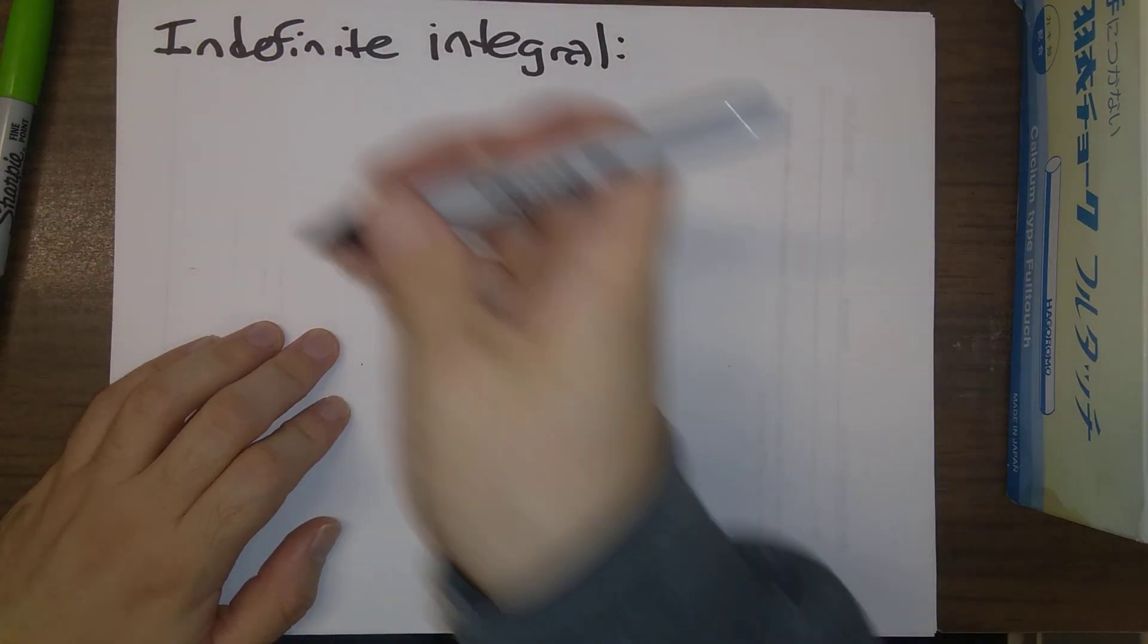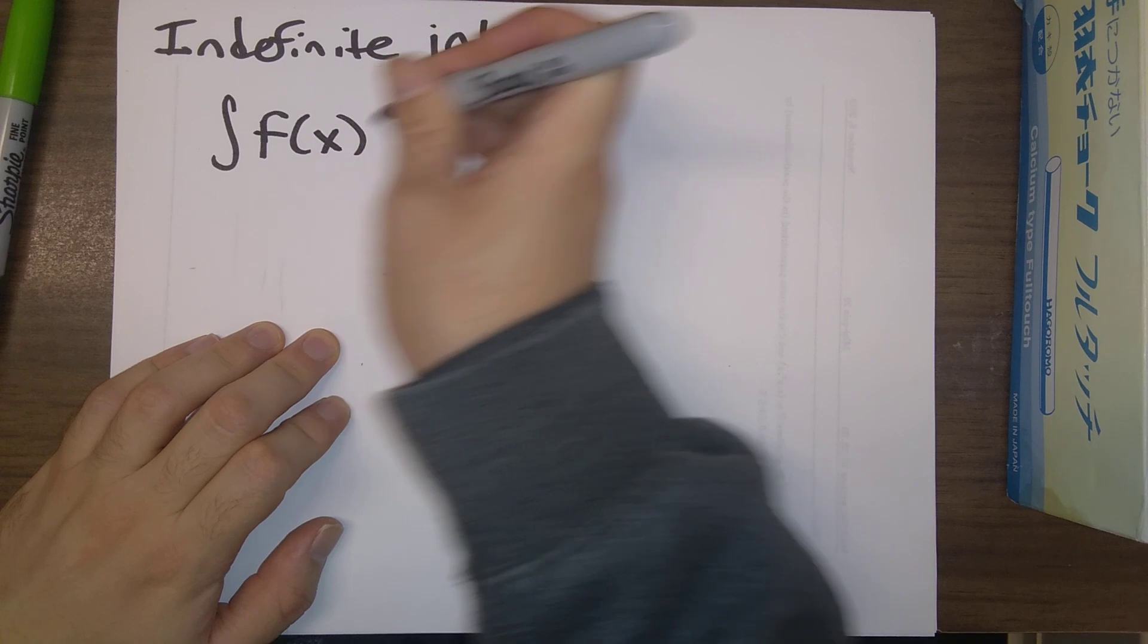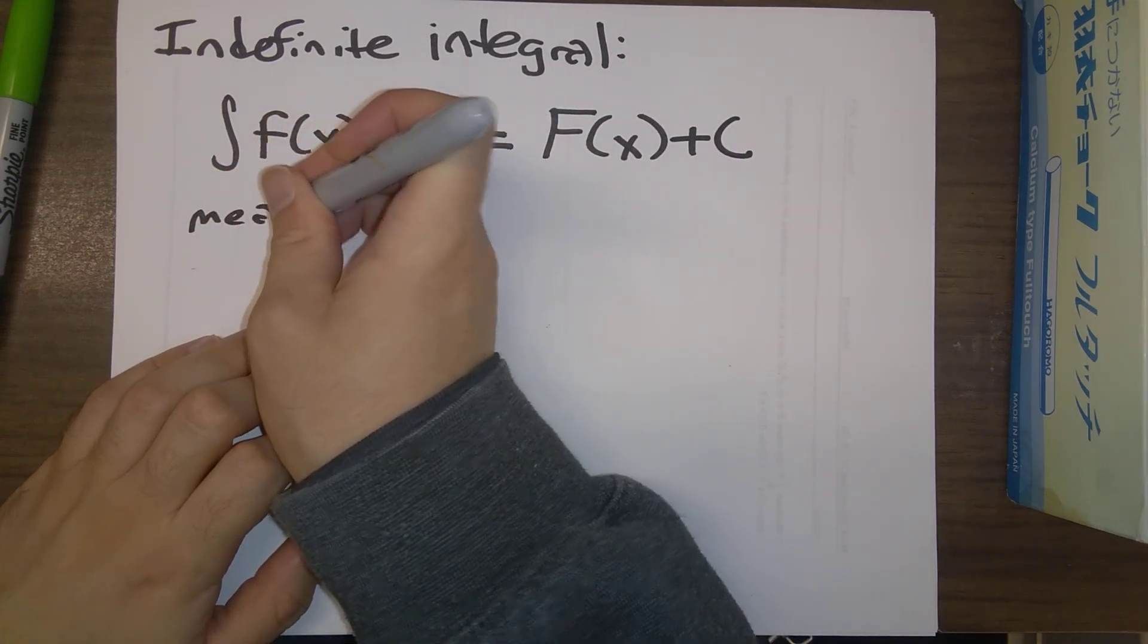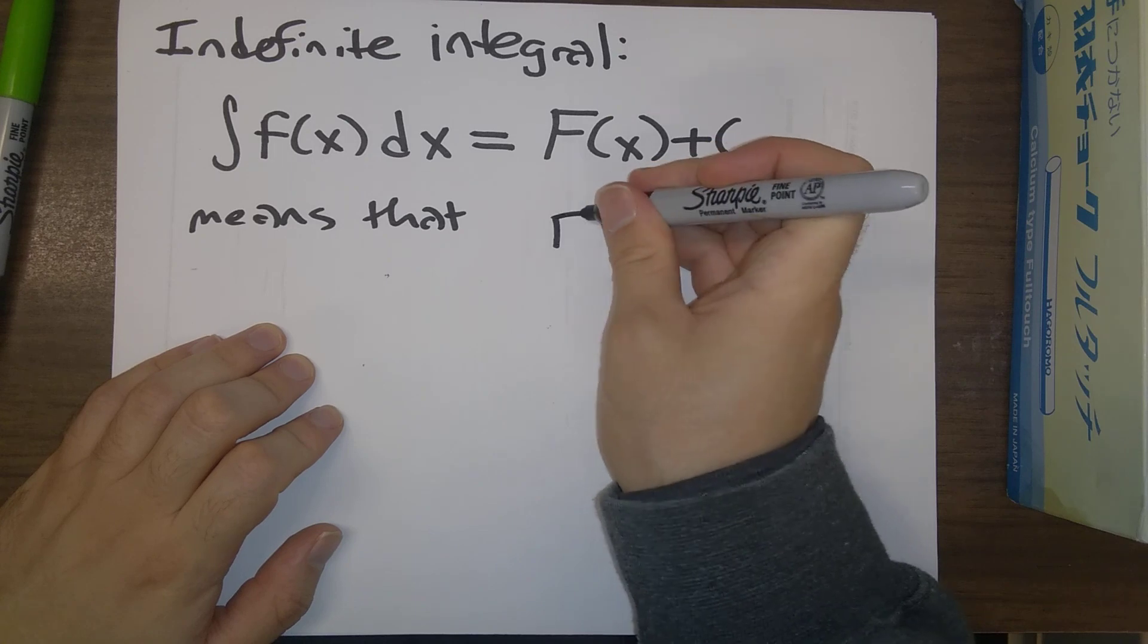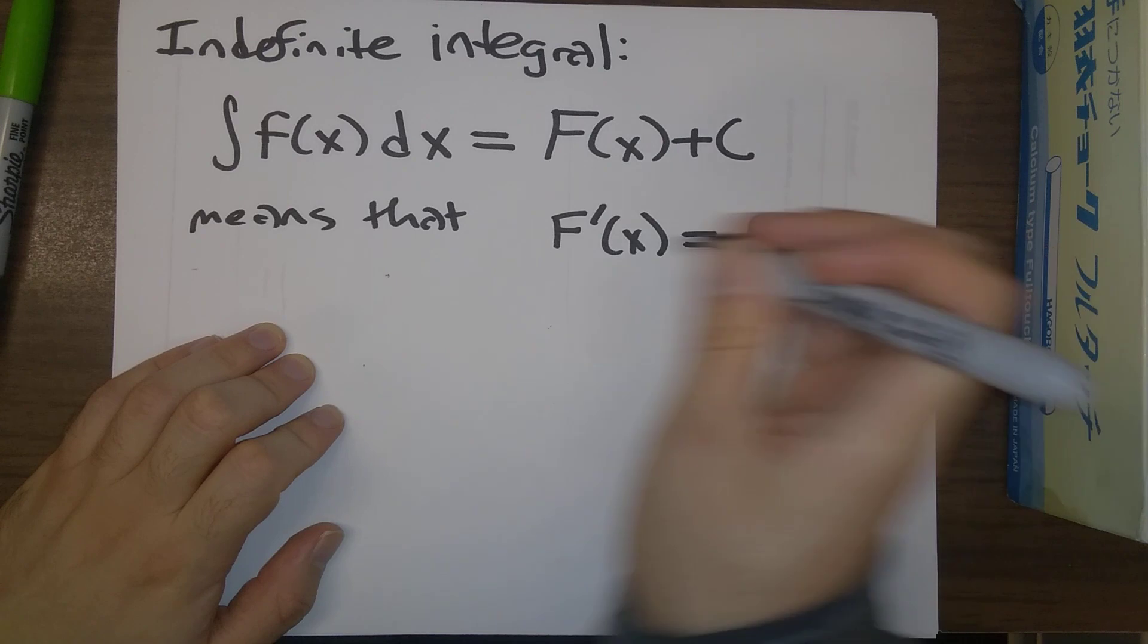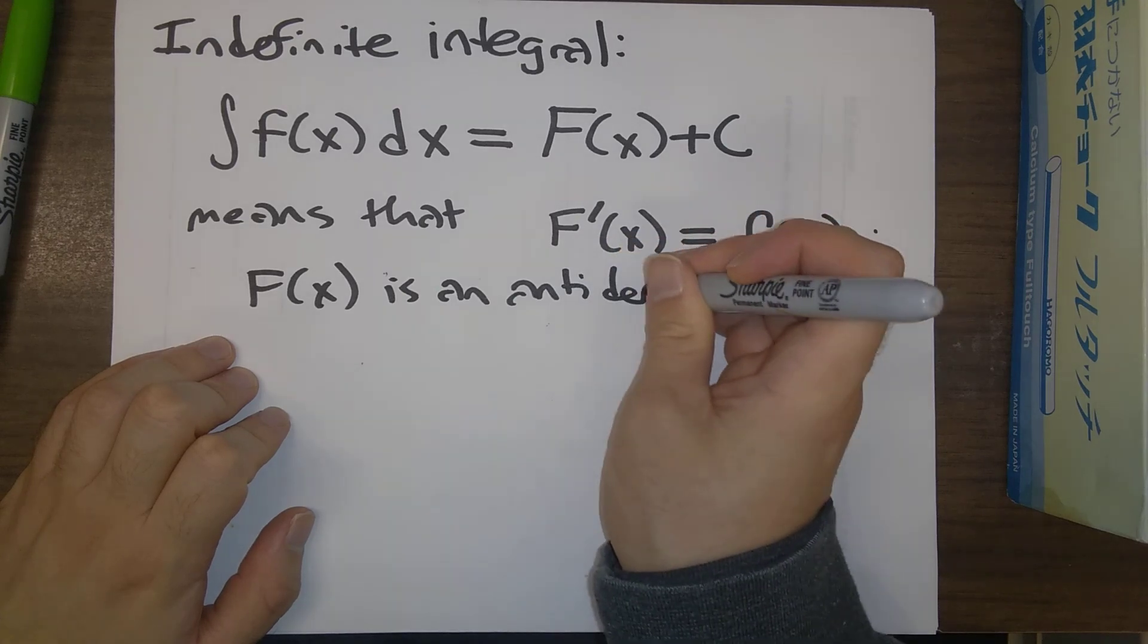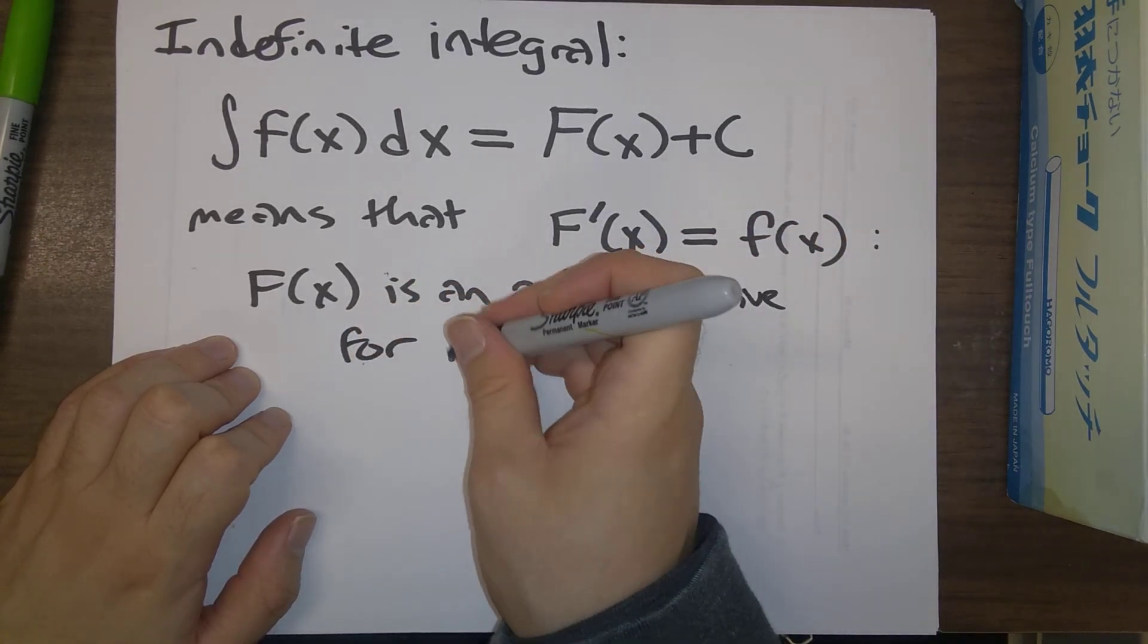And so the indefinite integral, the integral of little f of x dx is equal to big F of x plus c. This means that big F of x prime is equal to little f of x. It means that big F of x is an antiderivative for little f of x.